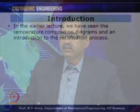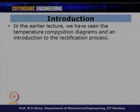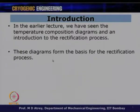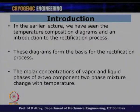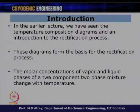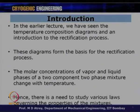In the earlier lecture, we introduced the temperature-composition diagram and how it can be exploited to understand the rectification process that actually happens in a rectification column. These diagrams form the basis of the rectification process. The molar concentration of vapor and liquid phases of a two-component, two-phase mixture changes with temperature. At every point during condensation, the vapor phase gets richer in the low boiling component while the liquid phase gets richer in the high boiling component. Because these diagrams are so critical, it is important to understand the basic laws governing mixtures.